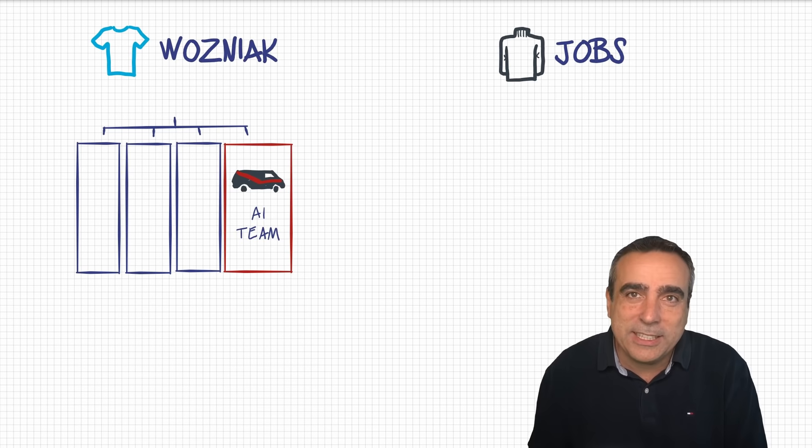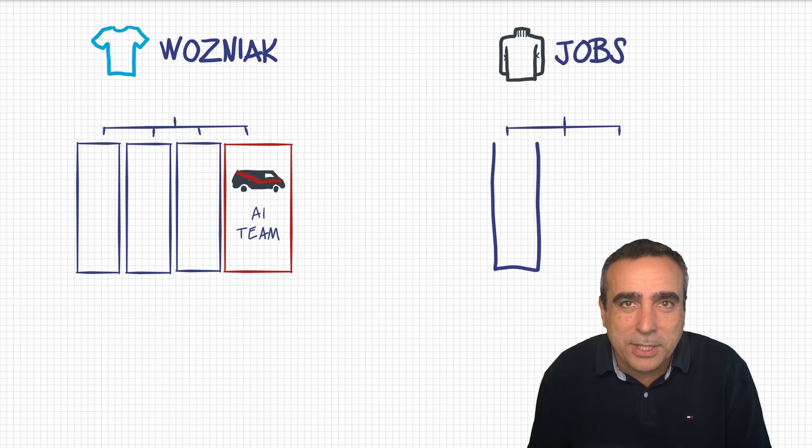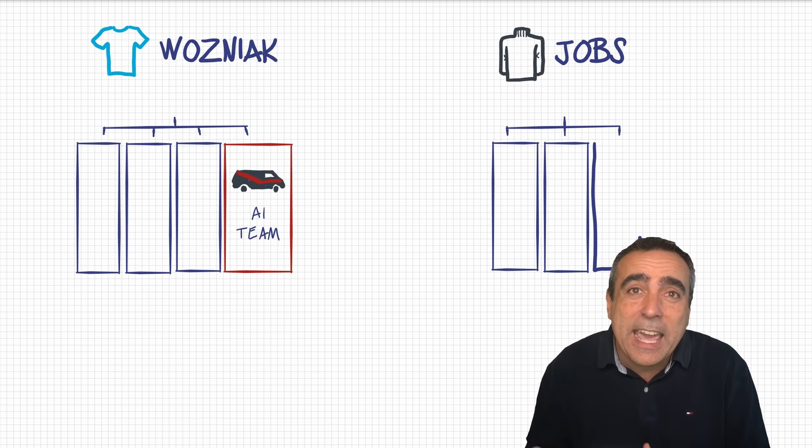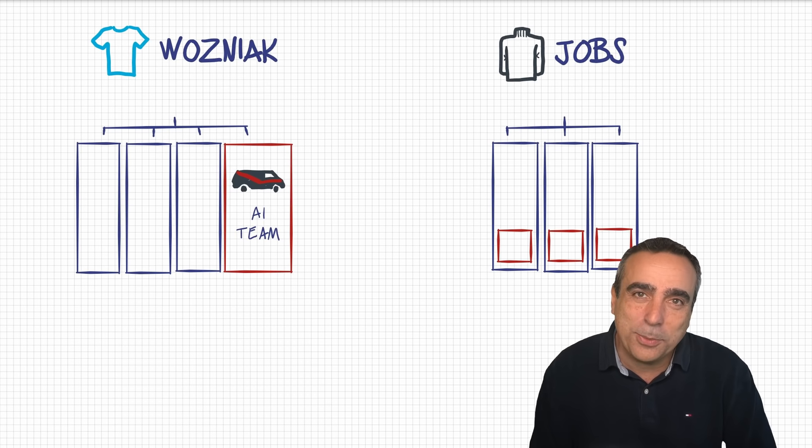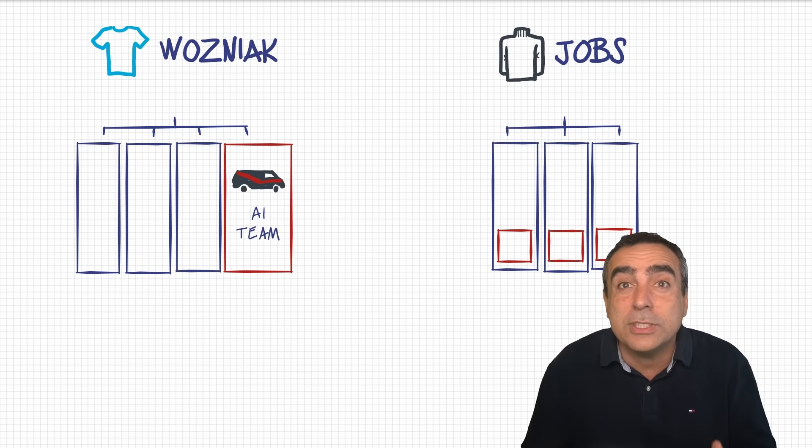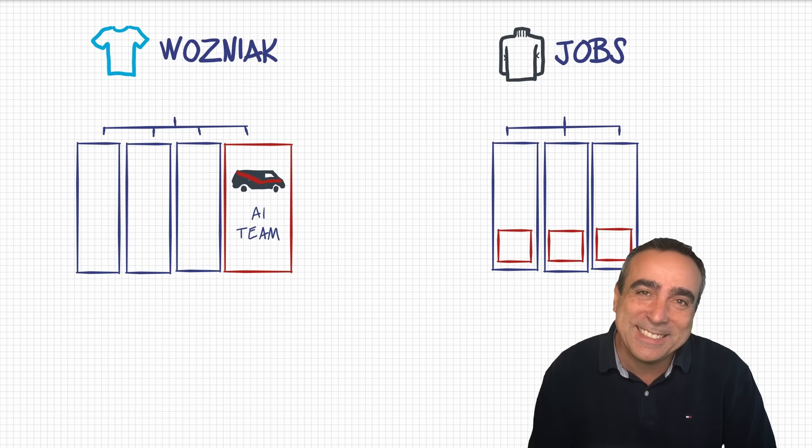So the org chart in this case will look different. We still have the different business units, but in this case, we will ask every business unit to lead their own AI transformation. That means that they will need some smaller AI teams inside or outsourcing it externally. Those would be like these red boxes that you can see here.